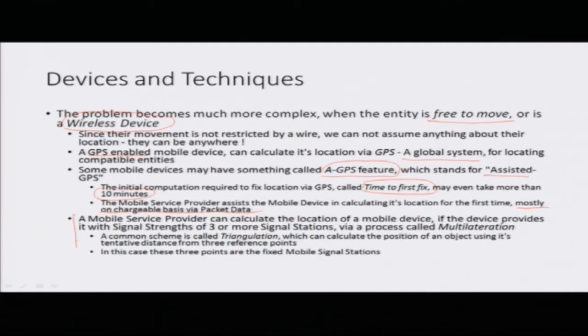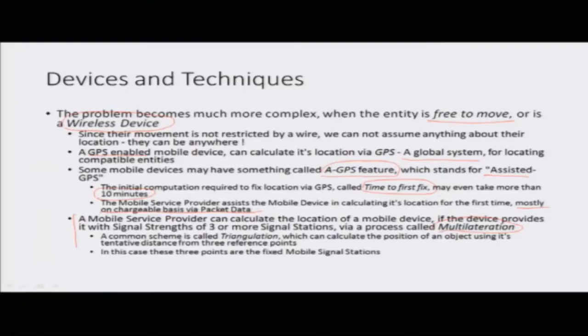The mobile service provider itself can calculate the location of a particular device via a technique called multilateration. If a device is getting signals from more than 3 cell towers and records all those signals and sends them to the mobile service provider, the provider can calculate the mobile device's location based on the principle that the farther a cell tower is, the weaker its signal at the device. Three cell towers are the minimum required — with 3 or more you can fix the position using triangulation, which involves solving trigonometric equations.